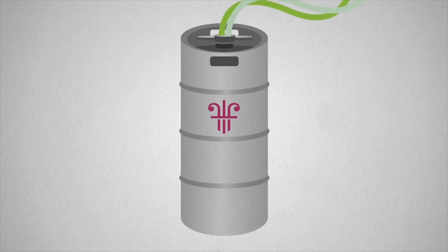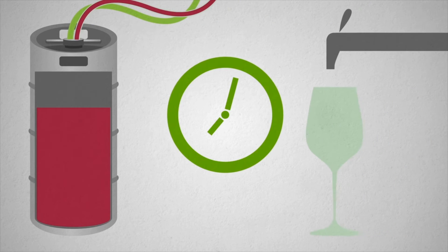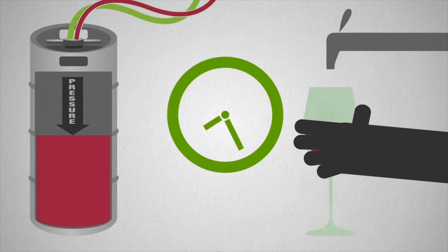When a keg is tapped, the most important process begins. The wine is constantly pressurized by an inert gas, preventing oxidation from ever occurring.